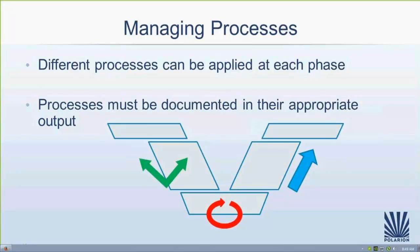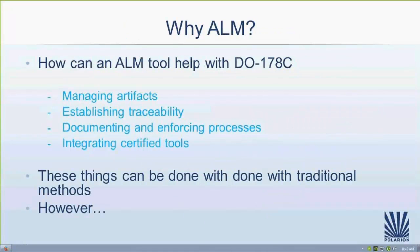Having an ALM tool really helps two things: coordinate all these processes together so you're not using one tool for agile development and another for requirements management, and help ensure that you have the specific outputs. There are four key parts to why ALM matters for DO-178C: managing the artifacts, establishing traceability, documenting and enforcing the processes, and integrating certified tools. All these things can be done with traditional tools — they have been done in the past — but ALM makes them significantly easier.